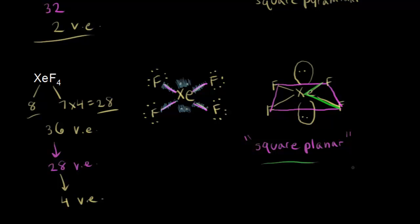That's how to approach six electron clouds. Our first example had zero lone pairs and was octahedral. Our second example had one lone pair and was square pyramidal. Our third example had two lone pairs and was square planar. Even though the electron clouds have the same octahedral geometry, the actual molecule has a different shape because you ignore the lone pairs on the central atom.